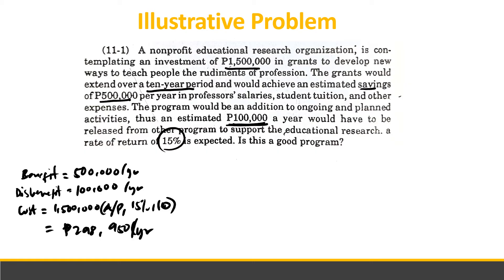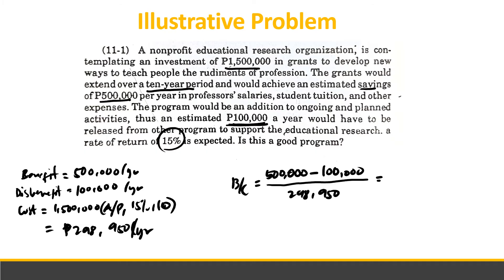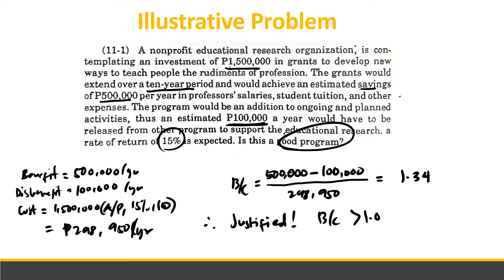Now applying the formula: benefit-cost ratio equals the benefit of 500,000 minus the disbenefit of 100,000, over the cost of 298,950 pesos. This equals 1.34. Therefore, the project is justified — it is a good program because the benefit-cost ratio is greater than 1.0. That is how you apply the benefit-cost ratio in determining the desirability of a certain project.